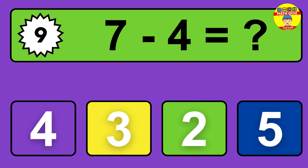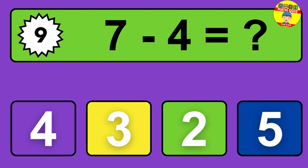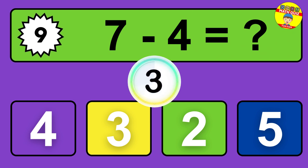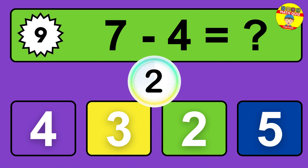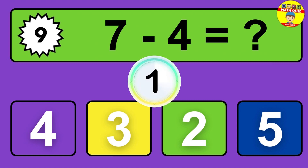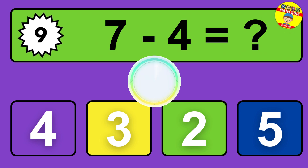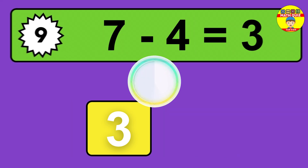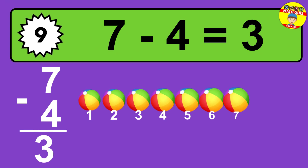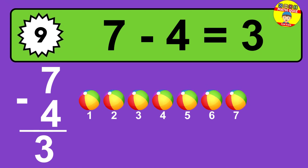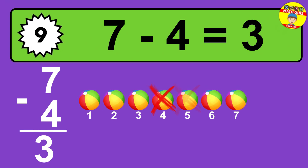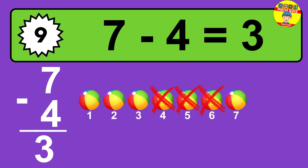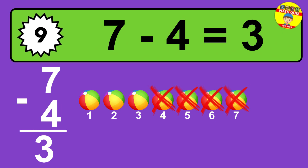Question nine: nine minus four equals what? So the answer is nine minus four is five. Let's count it — one, two, three, four, five.